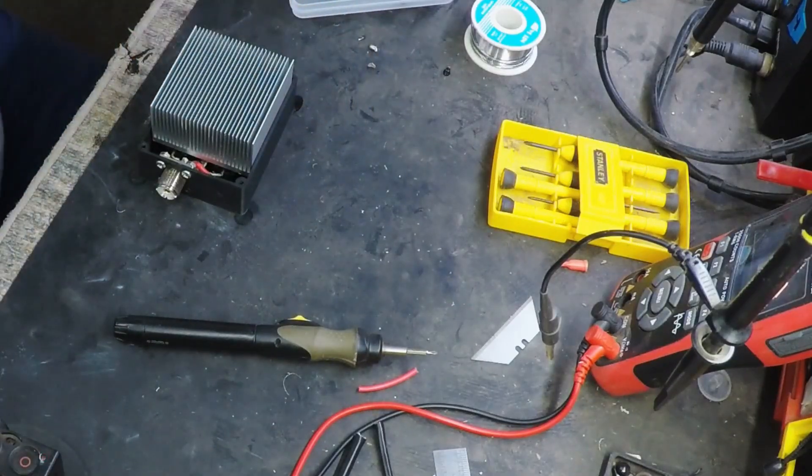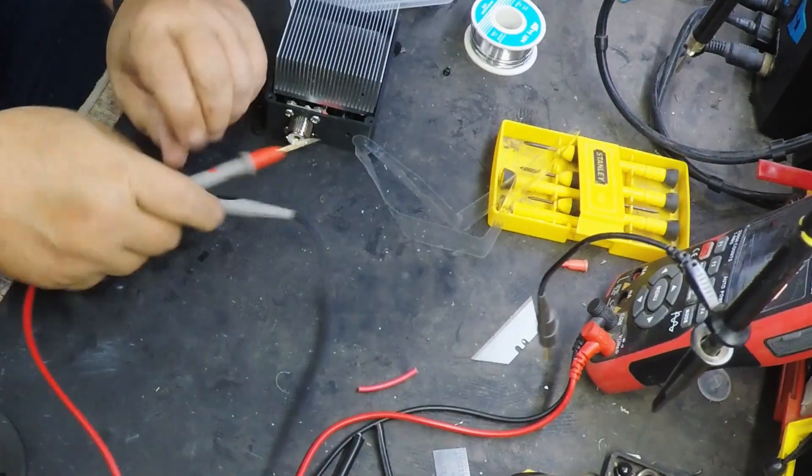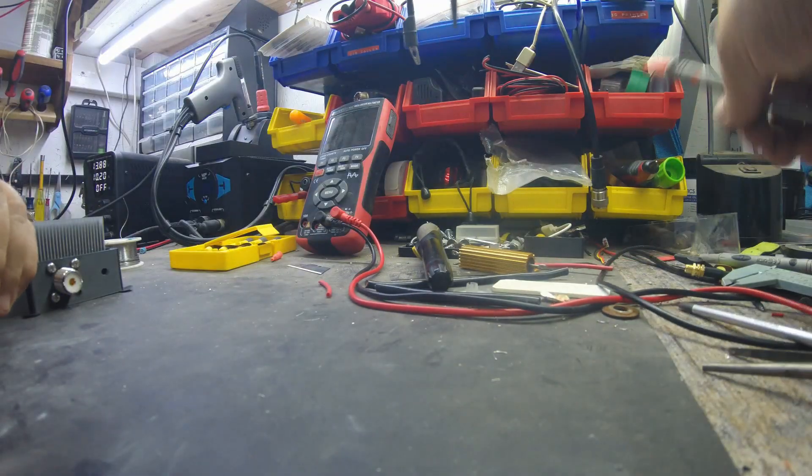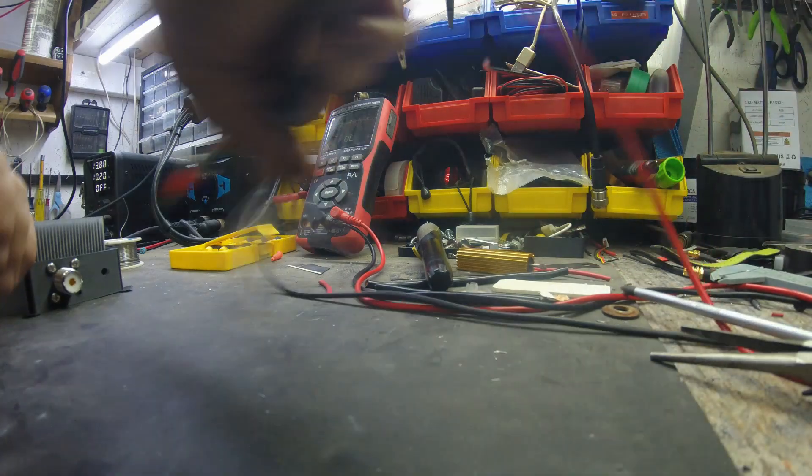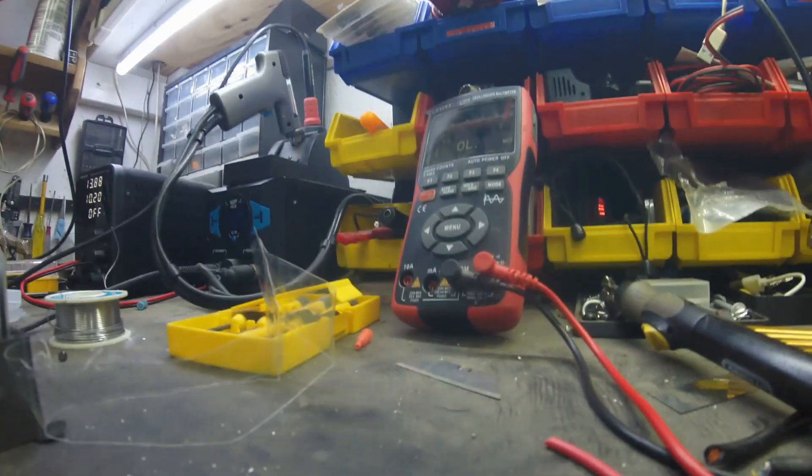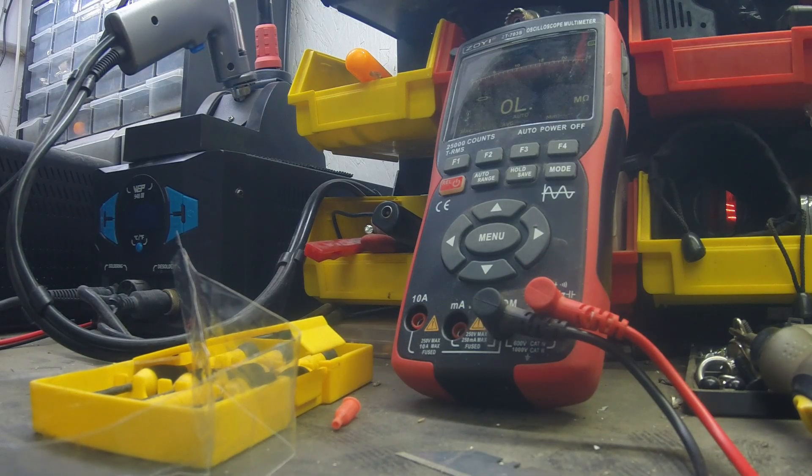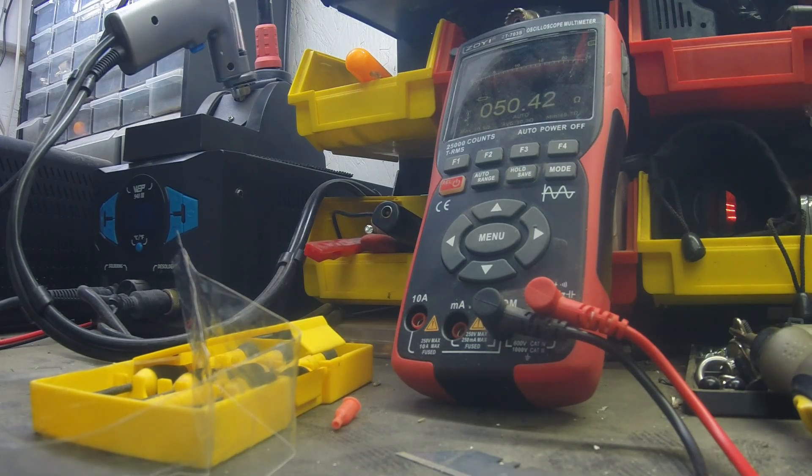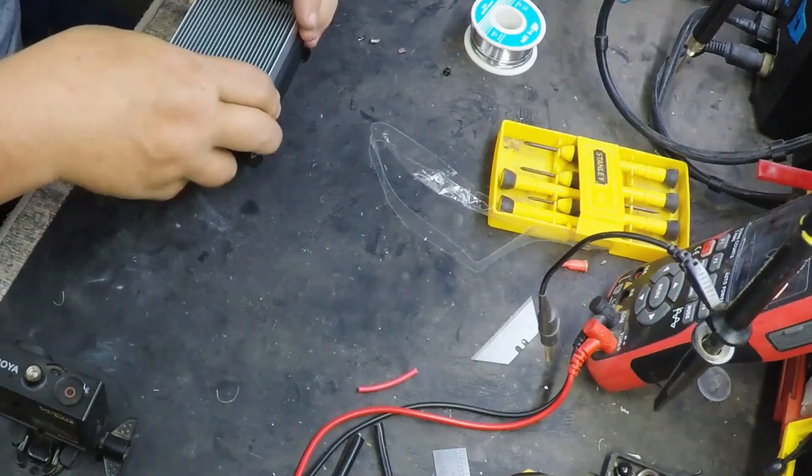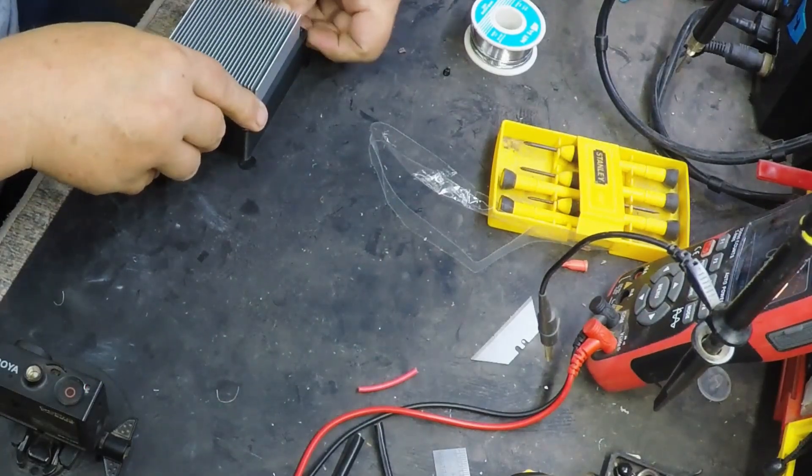There you go. We'll do one final check here. We'll go ahead and check and make sure we got a 50 ohm at the connector. Let's see if we have 50 ohms. Bingo. Okay, we're all good. Now I'm just putting the lid on it. As you see, it just slides over the heat sink.